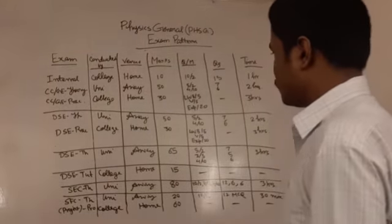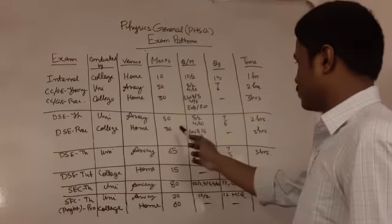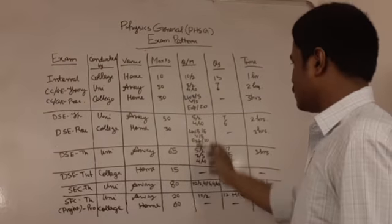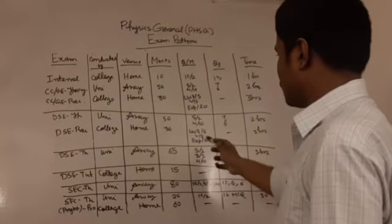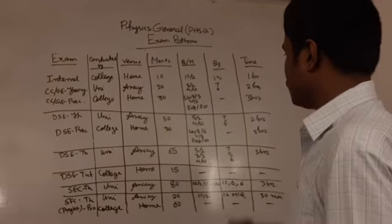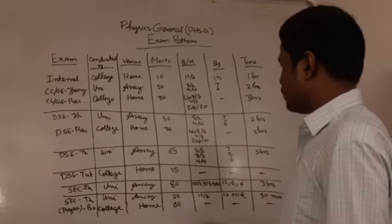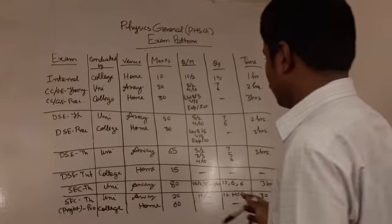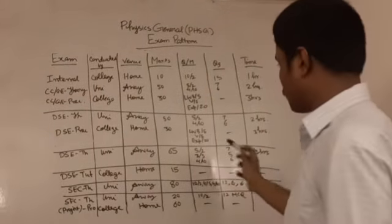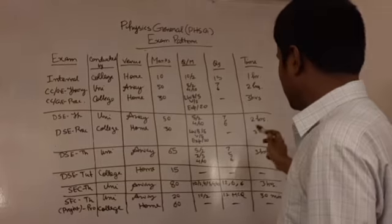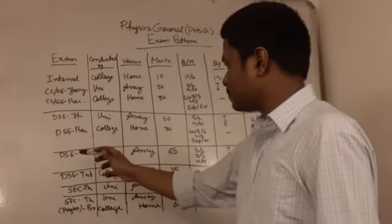The discipline specific elective practical exam is conducted by the college and has a total weightage of thirty marks. Just like the core course practical exam, it has a lab workbook with a weightage of five marks, a viva with a weightage of five marks, and an experiment with a weightage of twenty marks, with a total time of three hours for the practicals.